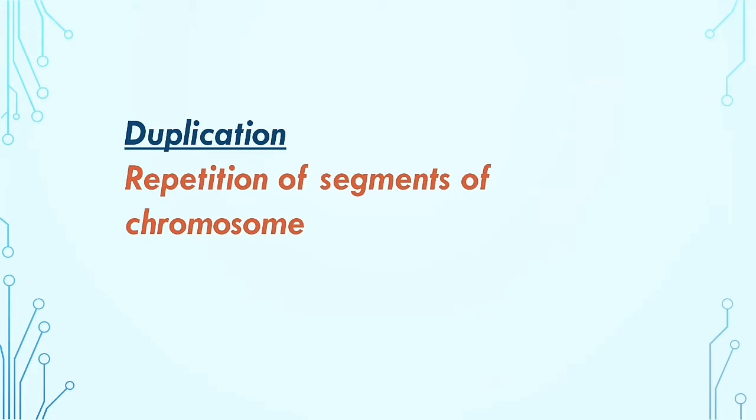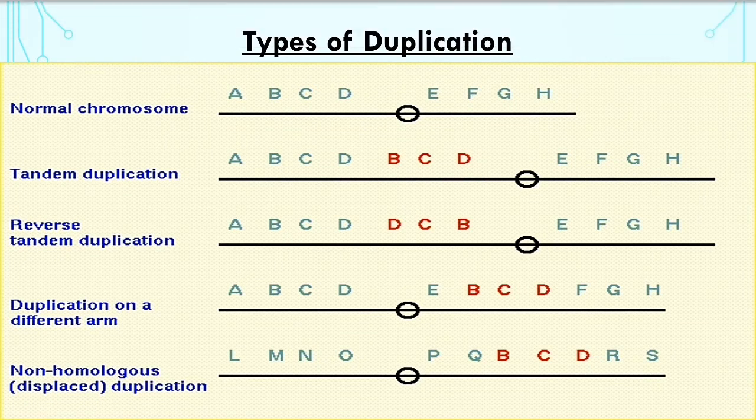Now let's talk about duplication. Duplications result from the doubling of chromosomal segments and occur in a range of sizes and locations. Duplication can be of various types: tandem duplication, reverse tandem duplication, duplication on a different arm, and duplication on a non-homologous chromosome, also known as displaced duplication.